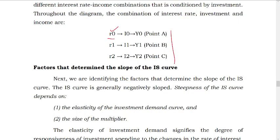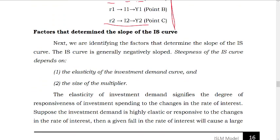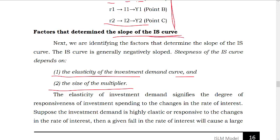R0, rate of interest; I0, investment; Y0 — we're going to connect here. S0 is also going to be considered. Here's the clue: how we can derive it. We are going to find the slope. The highest slope depends on the elasticity of investment demand and the size of the multiplier.